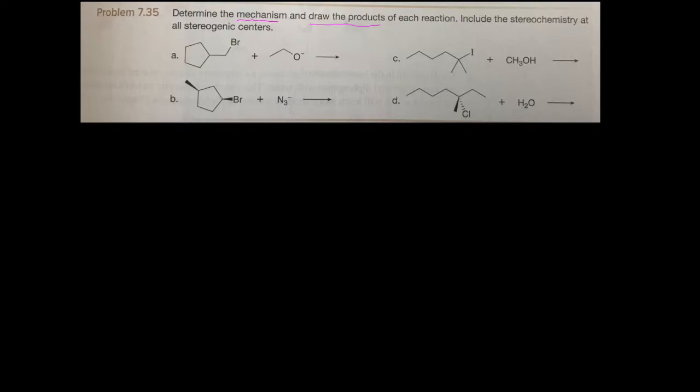Now, the reason why we need to think about the mechanism is because SN1 produces carbocations and you lose stereochemistry, and that gives you inversion and retention, which means you form two products. If you have a chiral molecule with a stereogenic center at the alpha carbon, but if you have SN2, you have inversion only. So that means you draw only one product.